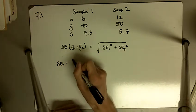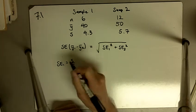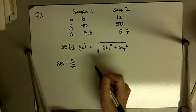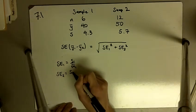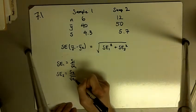SE1 is equal to S divided by the square root of N, or S1 divided by the square root of N1, and SE2 is S2 divided by the square root of N2.